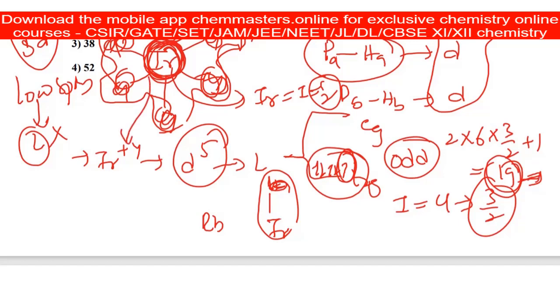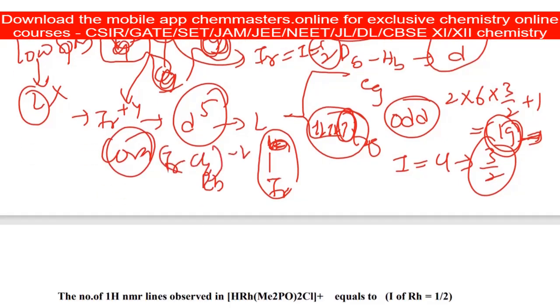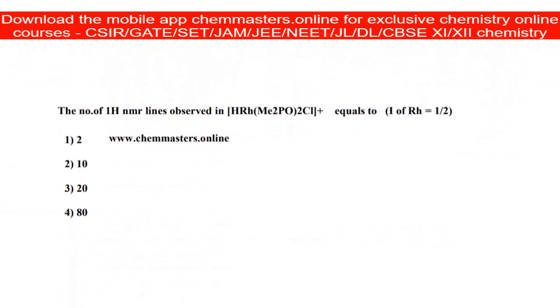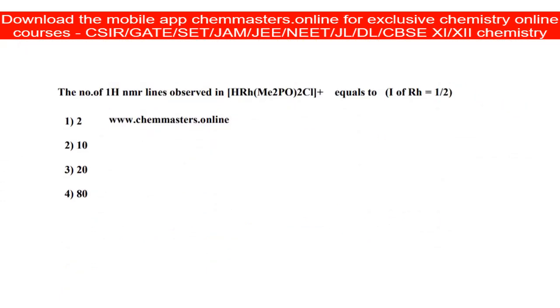So the next question: the number of HNMR lines observed. So here it is not 2, simply say 4. That is 4, not 2. In this case, you can see the bondings will be just like this.